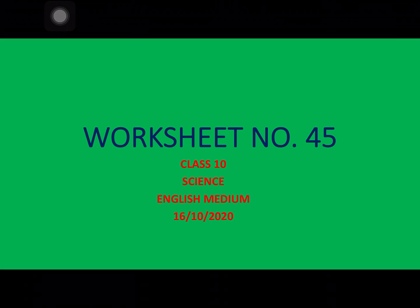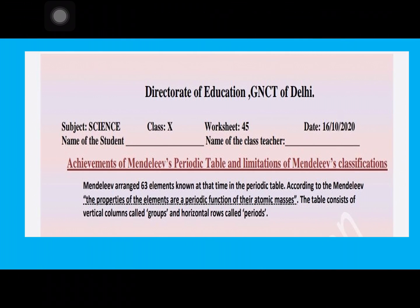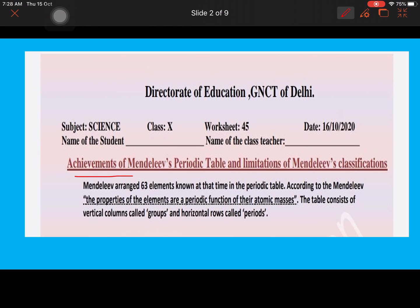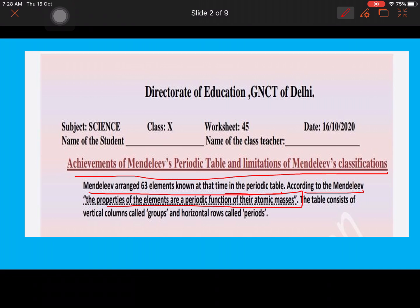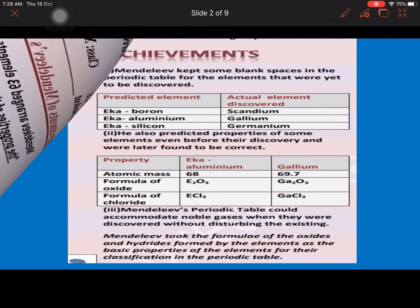Hello students. Today we will discuss worksheet number 4, tip 5 for class 10th science English medium, dated 16th October. As you know, the lesson on the periodic table is ongoing. Today we'll discuss the achievements of Mendeleev's periodic table and limitations of Mendeleev's classification. Mendeleev was able to arrange 63 elements known at that time in the periodic table. According to Mendeleev, the properties of elements are a periodic function of their atomic masses. This was the basic principle on which he made his periodic table. The table consists of vertical columns known as groups and horizontal rows known as periods.